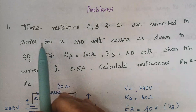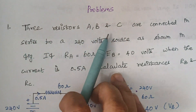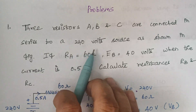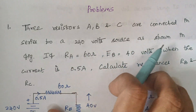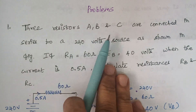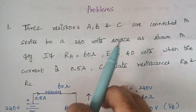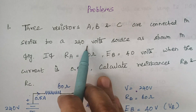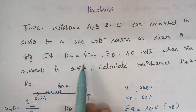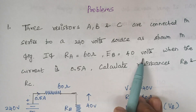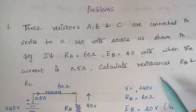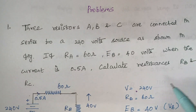The first problem: three resistors A, B and C are connected in series to a 240 volt source as shown in the figure. If RA is 60 ohms and VB is 40 volts, and the current is 0.5 amps, calculate the resistances RB and RC.